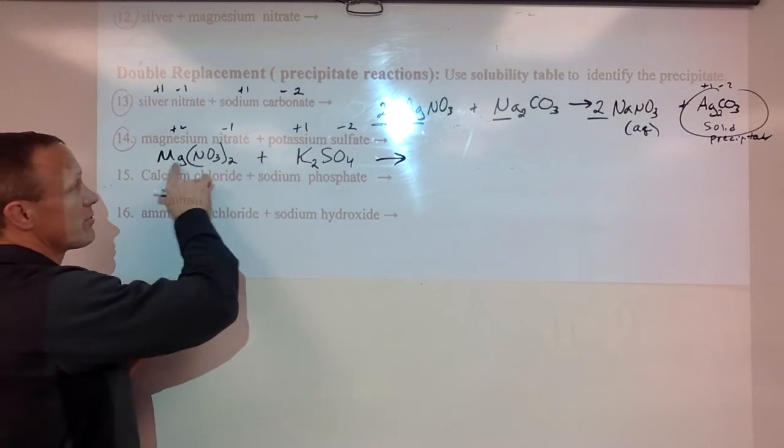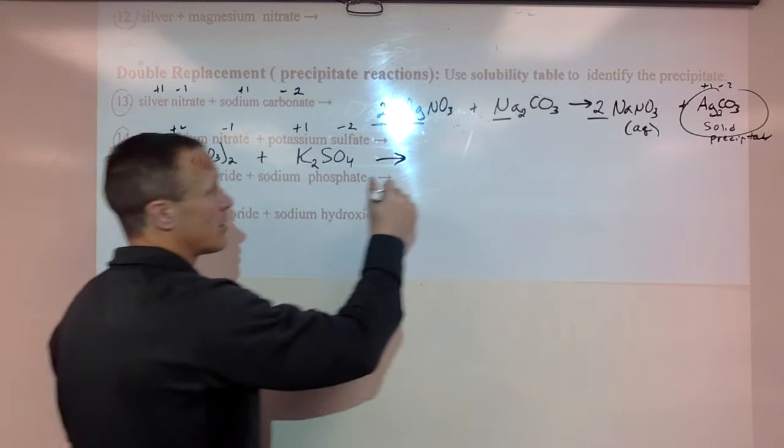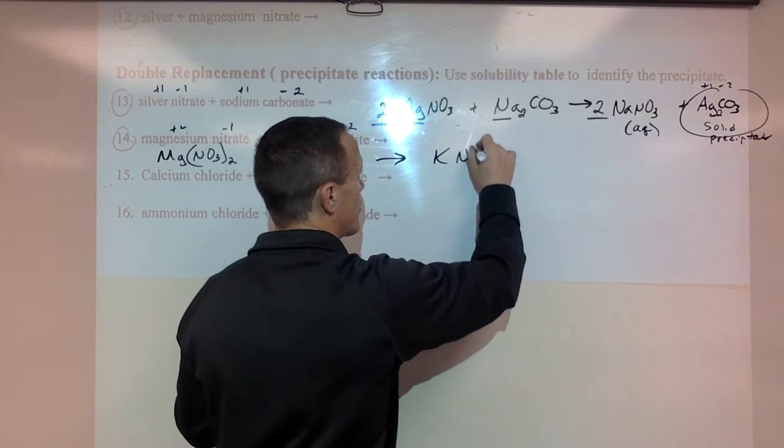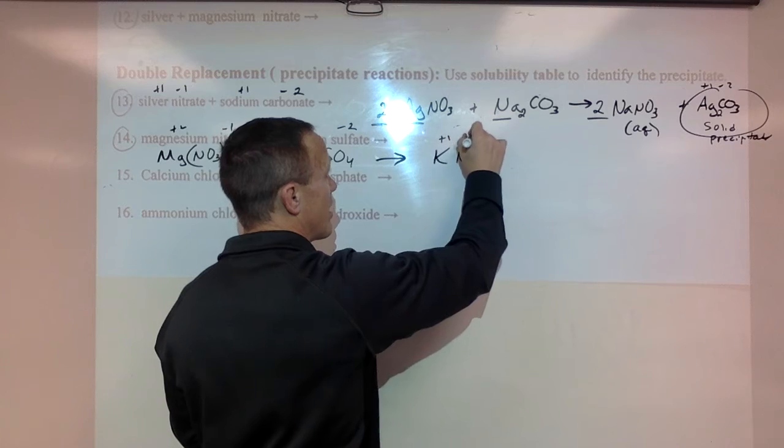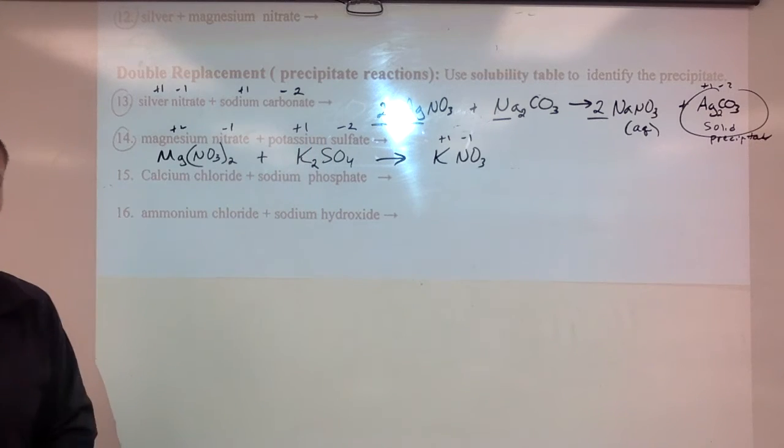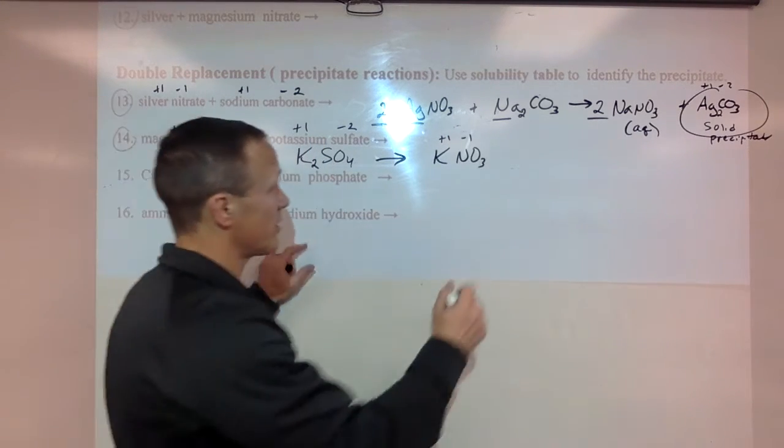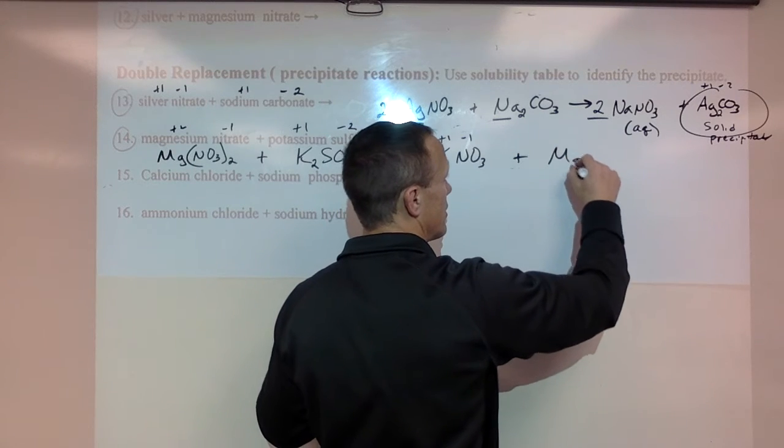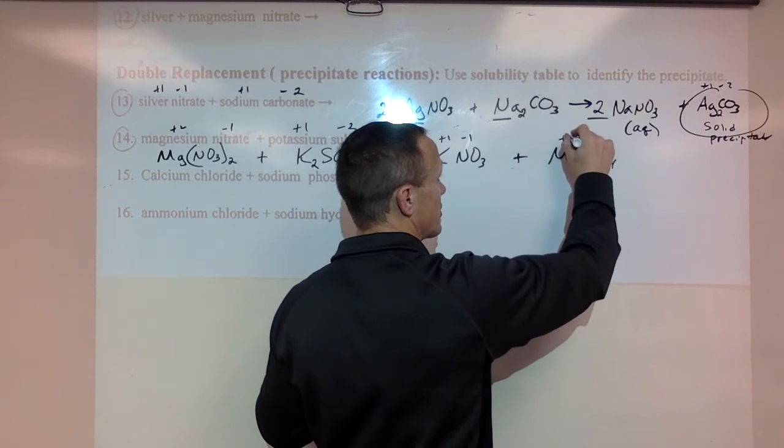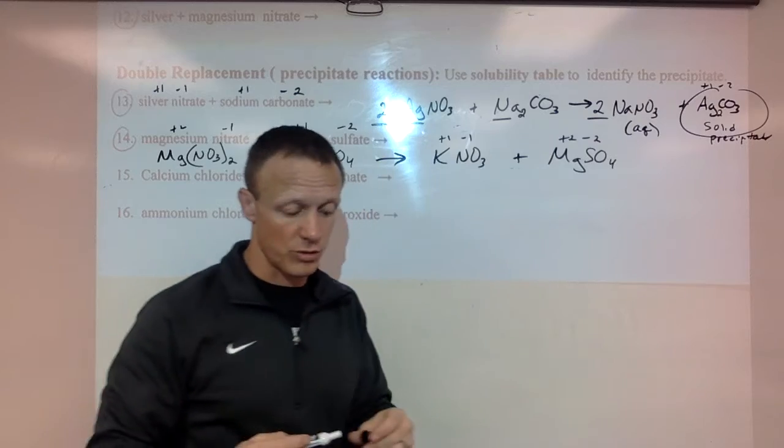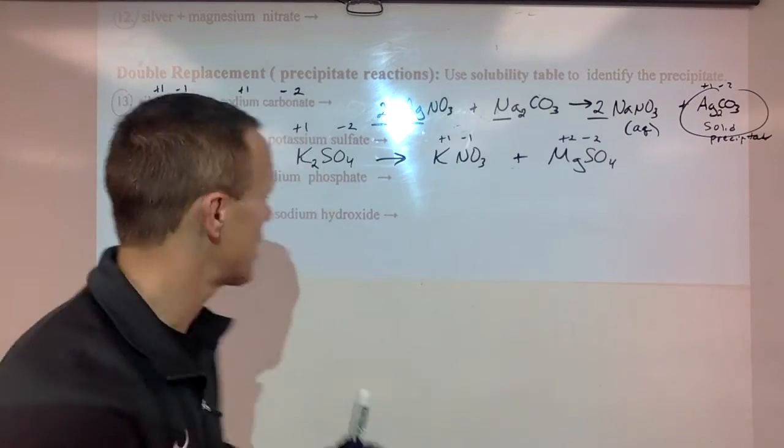Switch your potassium and your magnesium. So the K is going to go with the NO3. Potassium with the NO3. And it's a plus one minus one charge. So those are equaled out. Magnesium over here with the sulfate. And that's a plus two and a minus two charge. So those are equaled out.